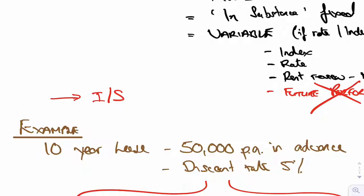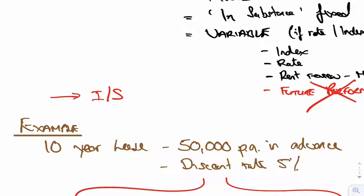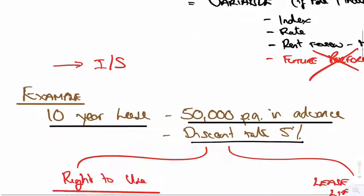Let's have a look at an example then, an example that we've done before. Remember this one, 10-year lease, 50,000 per annum in advance, discounted down at 5%. When we did that,